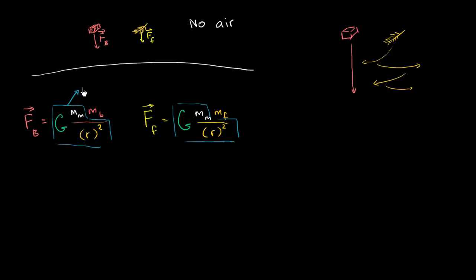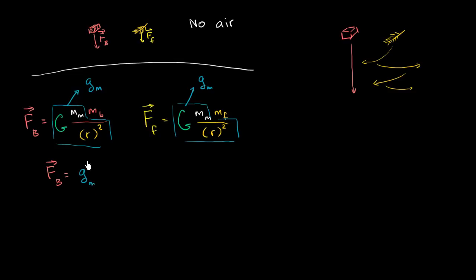Let's replace that expression and call it the gravitational field on the moon, g sub m. If you multiply this number by any mass, it tells you the gravitational force acting downward on that object on the moon. So the force on the brick equals g sub m times the mass of the brick, and the force on the feather equals g sub m times the mass of the feather.